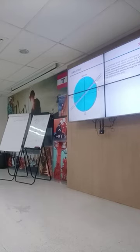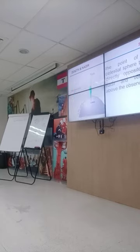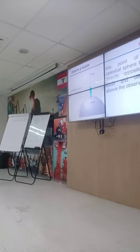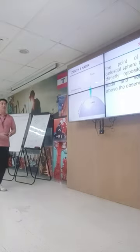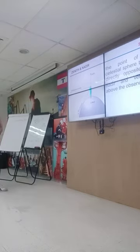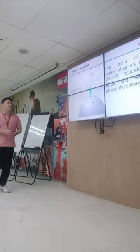Amplitude is different from azimuth. Now we have the zenith and the nadir. This is your zenith, that is your nadir — the point of the celestial sphere directly opposite the nadir and vertically above the observer.